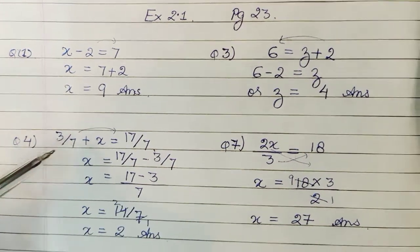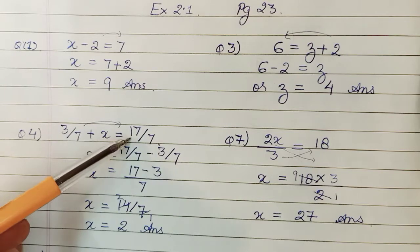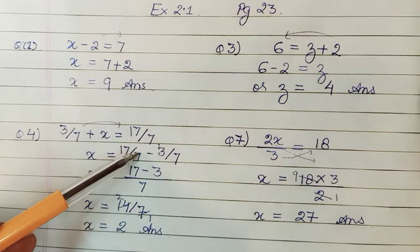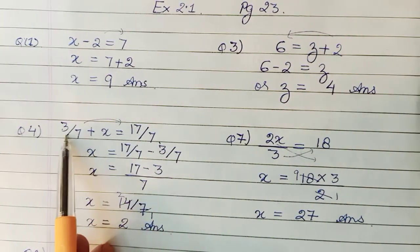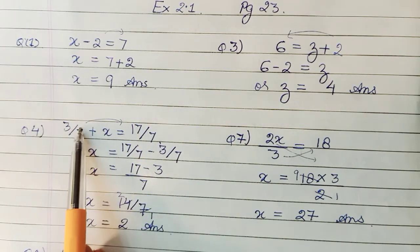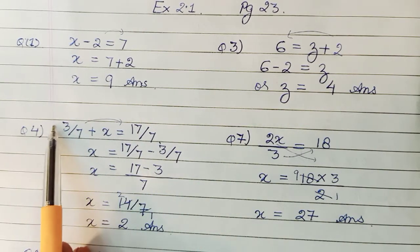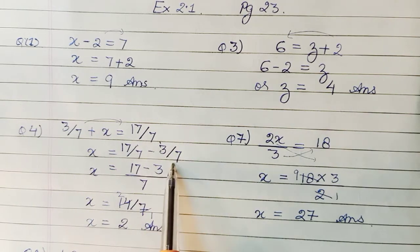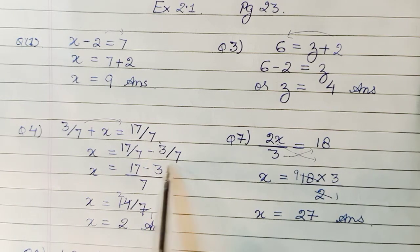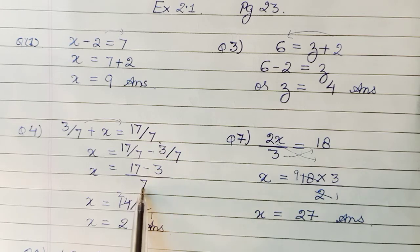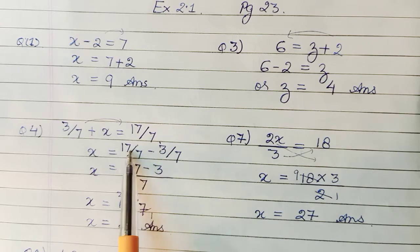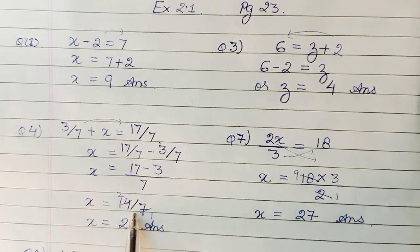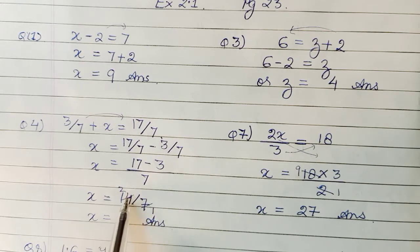Now look at the fourth question, which had 3 upon 7 plus x equal to 17 upon 7. So again, the same thing, if I need x here, I'll have to take this or I have to remove this. And for balance, I need a minus 3 by 7. So this goes here as minus 3 by 7. The denominator was same. So 7 and 7 is your common denominator. We can straight away subtract the numerators. 17 and this was minus 3. 17 minus 3 becomes 14. 7 plus 7, 2 is our 14. So your x comes out to be 2.